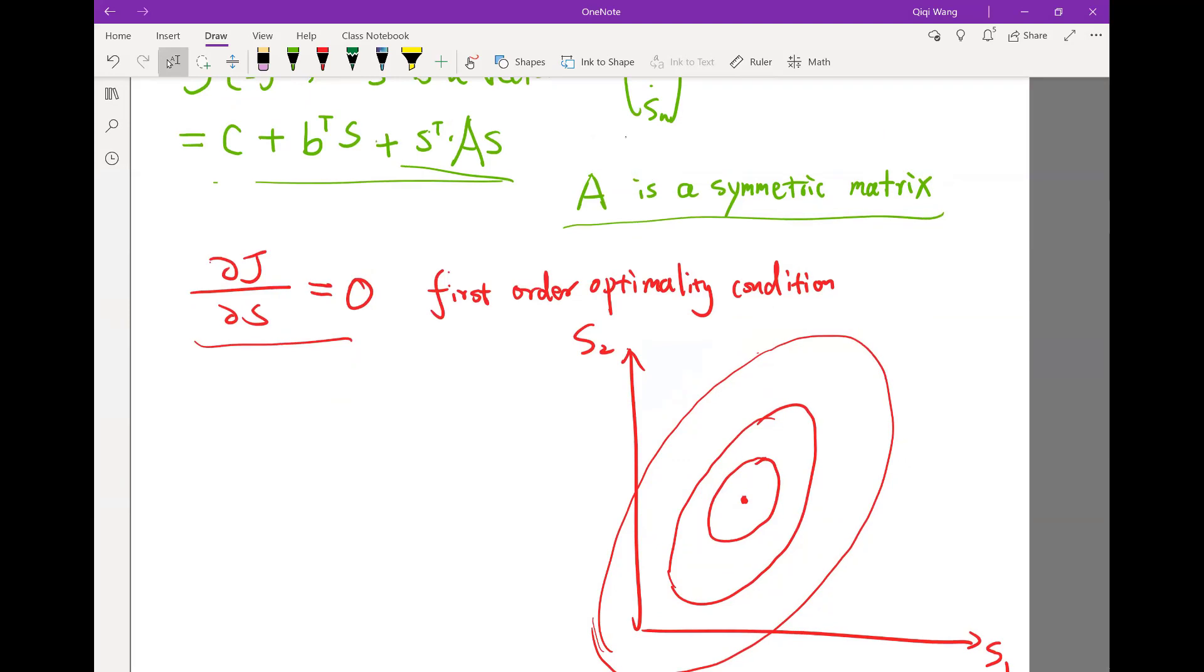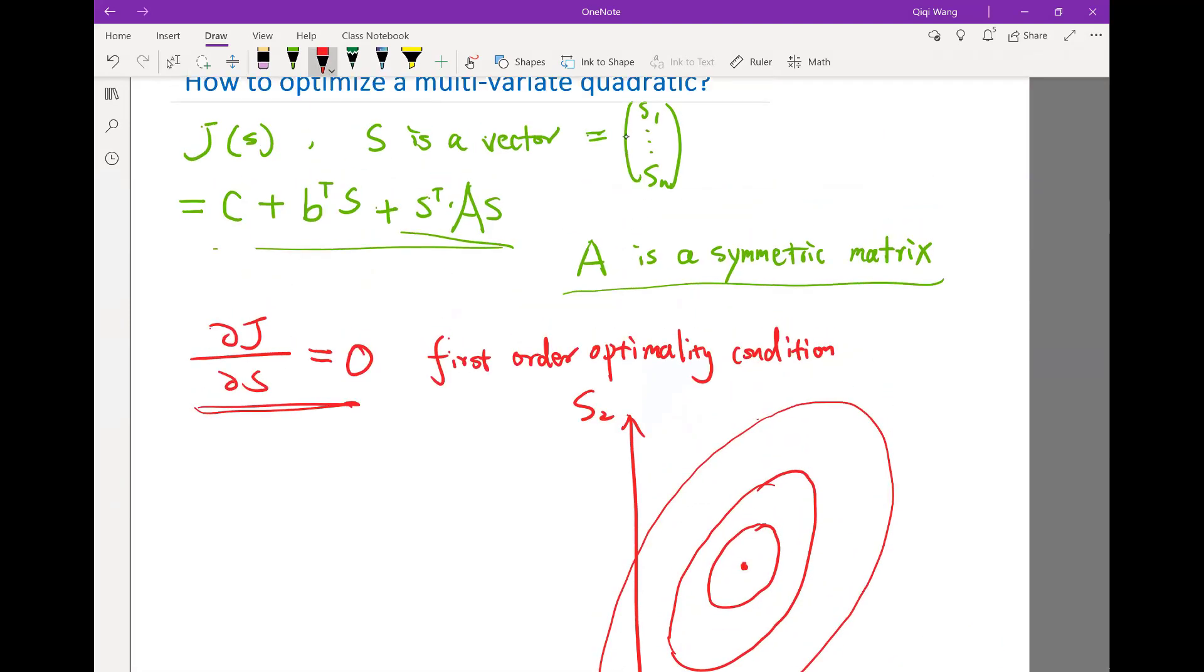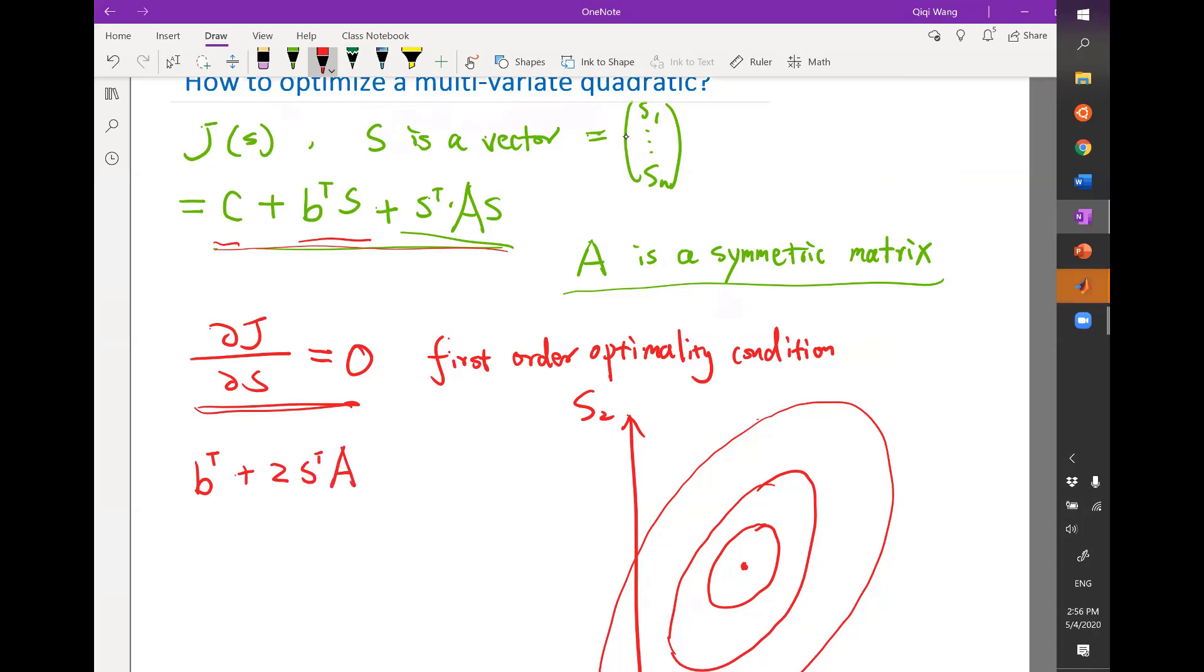So if you look at this first order optimality condition and evaluate the derivative on this quadratic, what you're going to find out is that the constant term has zero derivative. The linear term has a derivative equal to B transpose. And the quadratic term has a derivative of 2 times S transpose times A. So it is this linear combination of a constant term and another linear term that derives from the derivative of the quadratic term. That is going to be equal to zero.